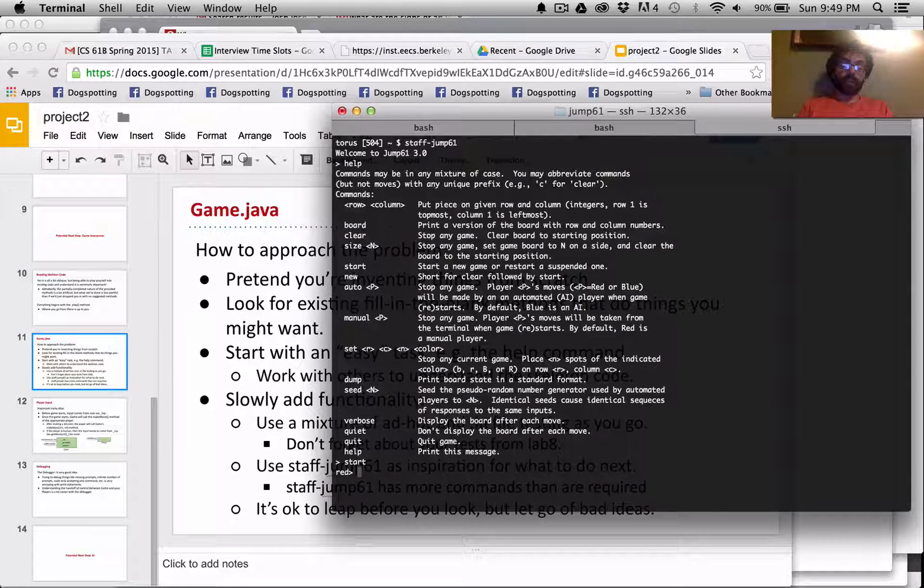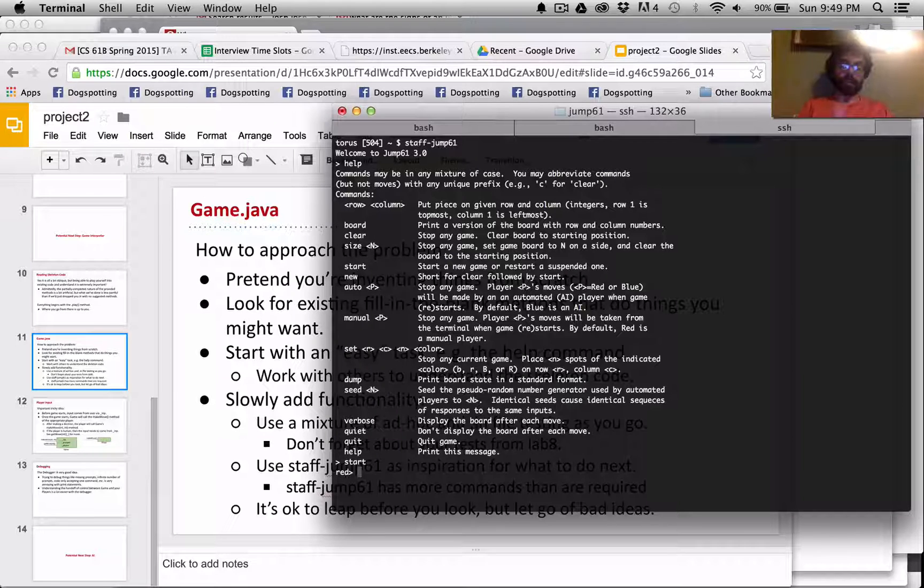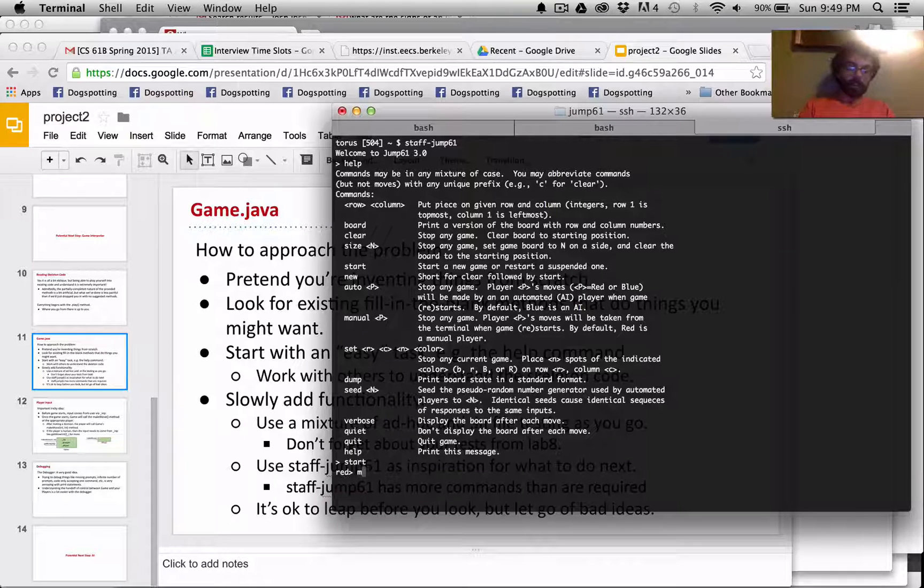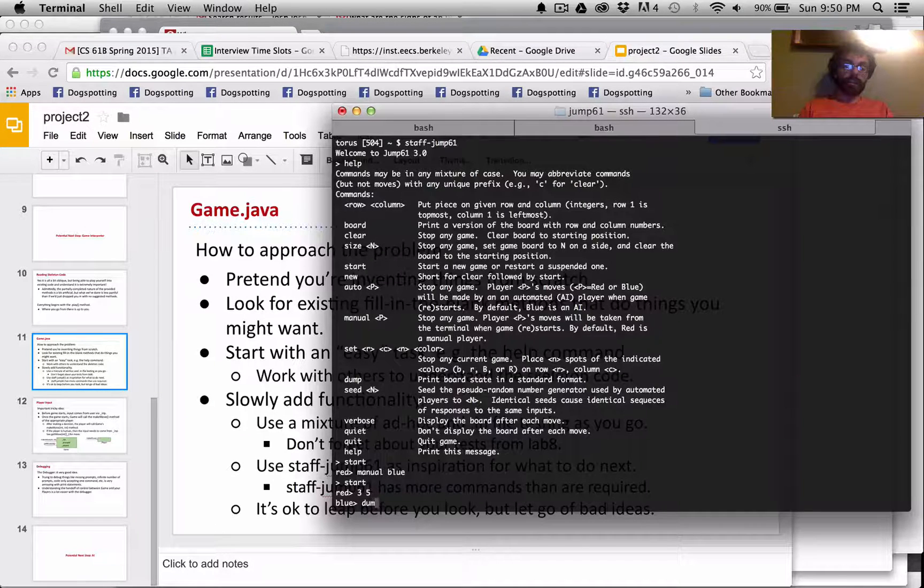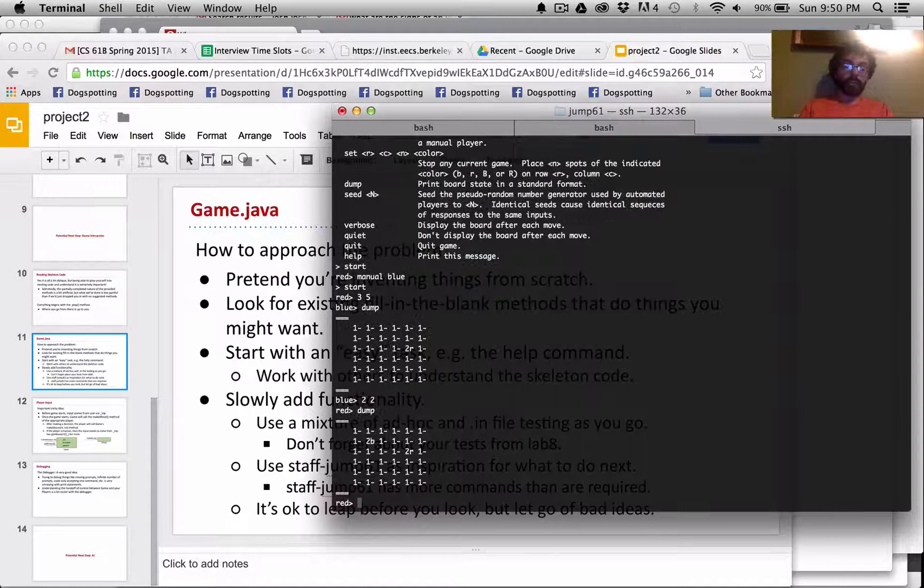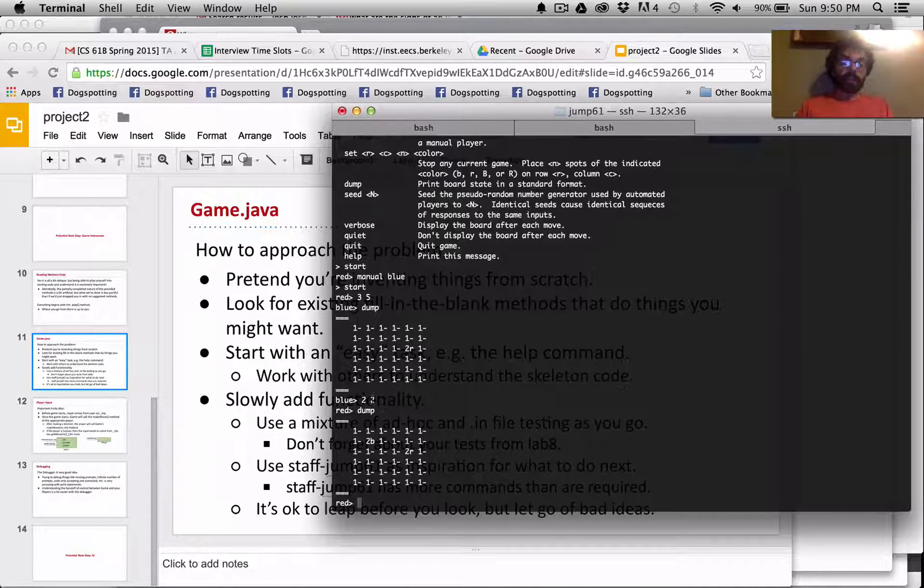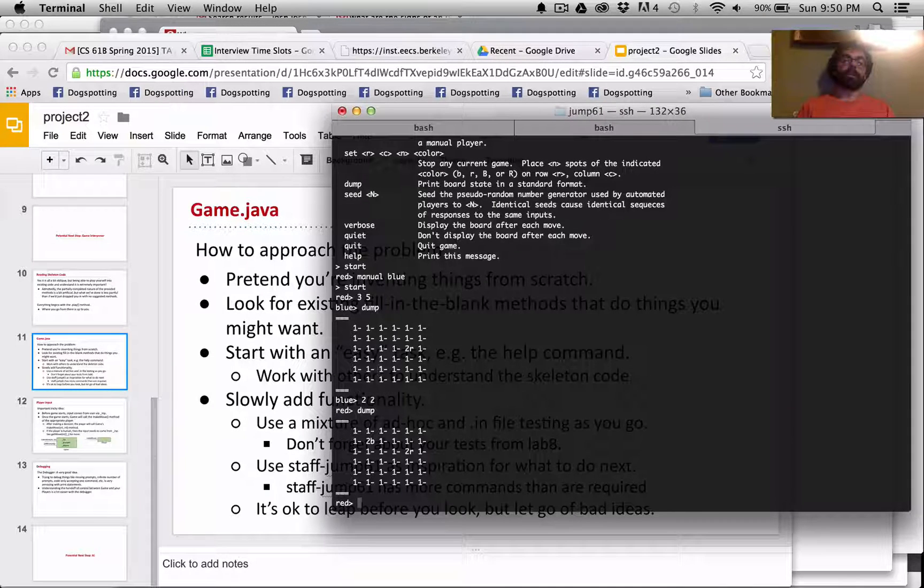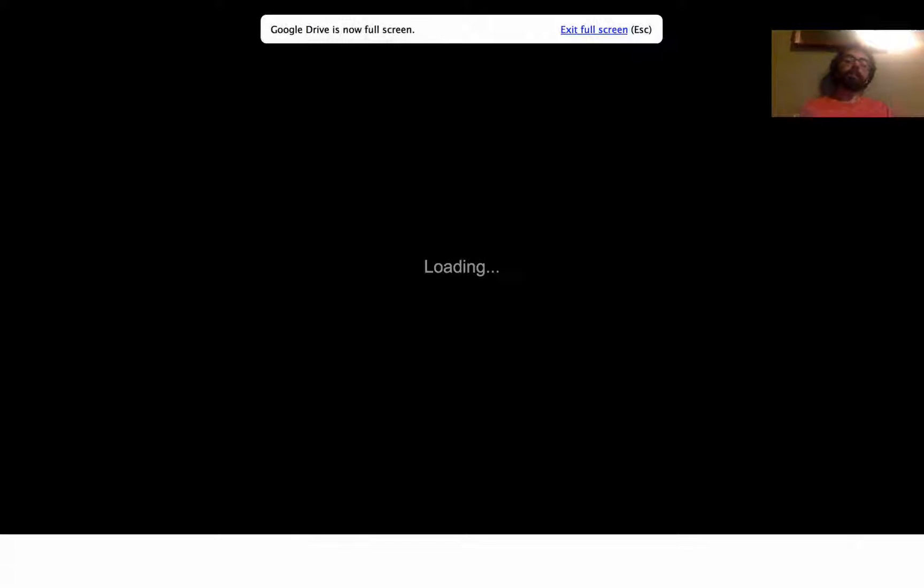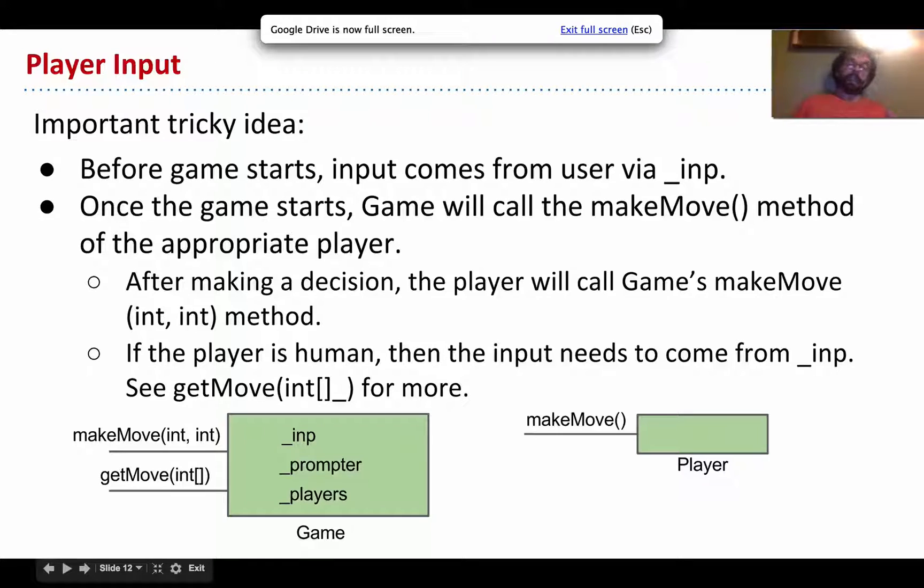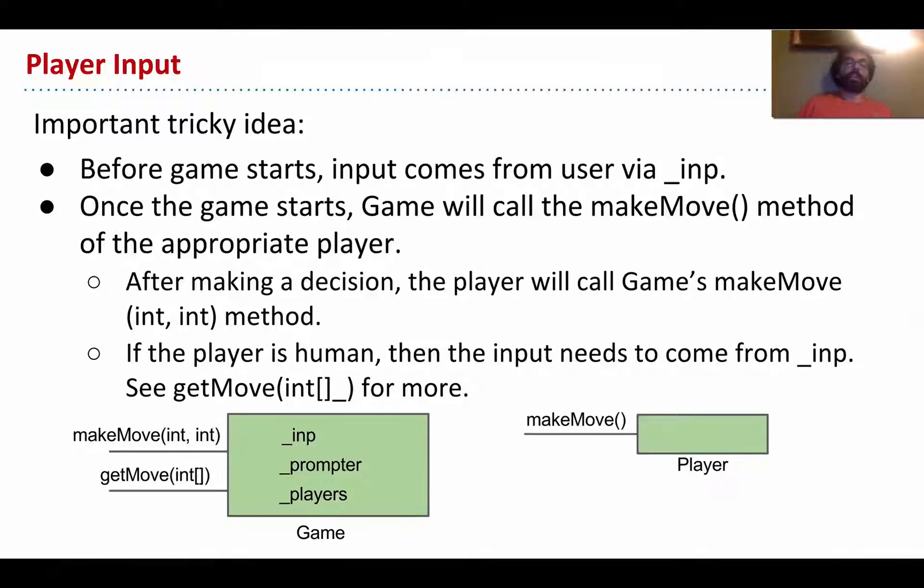So, most of these should be relatively straightforward, but where it's going to get a little trickier is whenever you need to start actually playing a game. So, for example, when I do start, the red player is supposed to make some kind of choice. I'm going to make blue also manual. I'm going to start. Okay, so I'm going to say 3, 5, dump, 2, 2, dump, and so forth. So, being able to handle these commands, these special numerical commands, is going to be a little different.